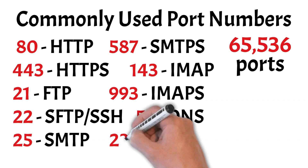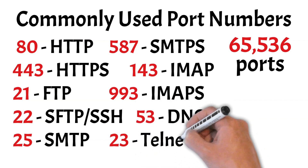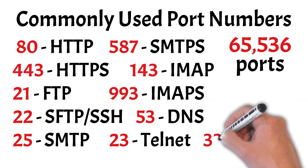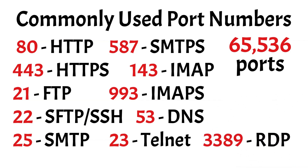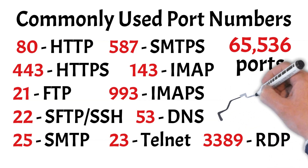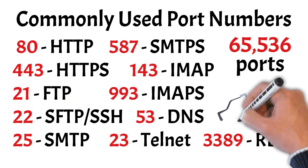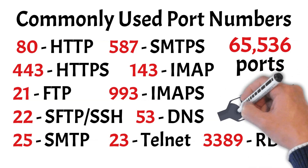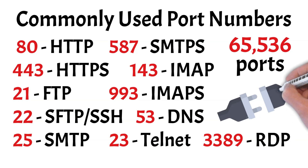Other important ports include port 23 used for remote access with Telnet, though it's mostly replaced by SSH, and port 3389, which enables remote desktop connections. These well-known ports help keep the internet running smoothly, ensuring data reaches the right place.